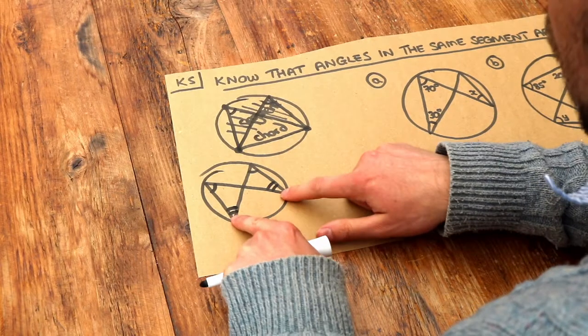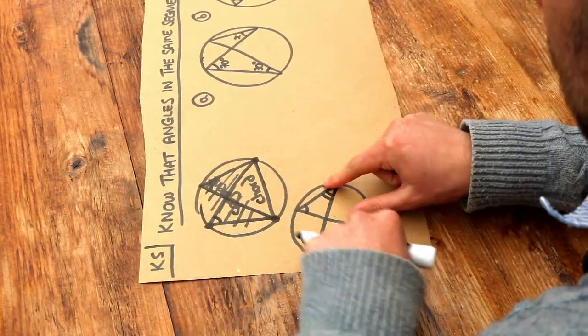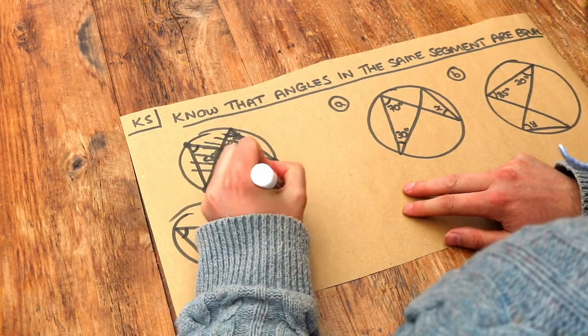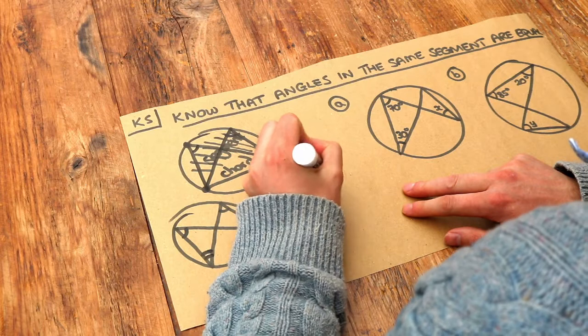So if the angles are both at the bottom or both at the top or they're both at the left or they're both at the right, they will be the same. So angles in the same segment are equal.